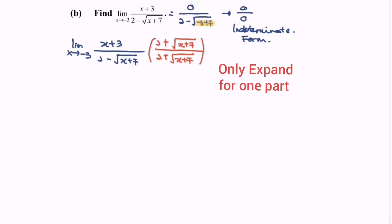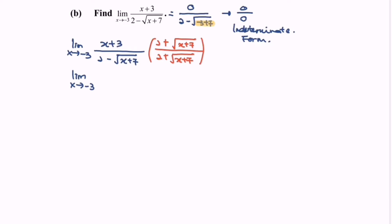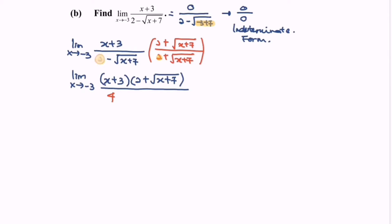Take note that we only expand the denominator. The limit when x approaches negative 3 gives us the numerator: (x plus 3) multiplied with (2 plus square root of (x plus 7)), over the expanded denominator. Multiplying 2 by 2 gives 4; 2 multiplied by square root of (x plus 7) gives plus 2 square root of (x plus 7); followed by negative 2 square root of (x plus 7); and finally negative (x plus 7) from square root of (x plus 7) times square root of (x plus 7). Simplifying the denominator, we get 4 minus 7, which equals negative 3.